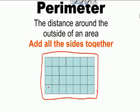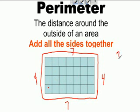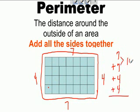Going around the outside of a rectangle: there are four units on one side, seven units on another side, four units on the opposite side, and seven units on the last side. To get the perimeter, you add seven plus seven plus four plus four. That's fourteen plus eight, which equals twenty-two units.